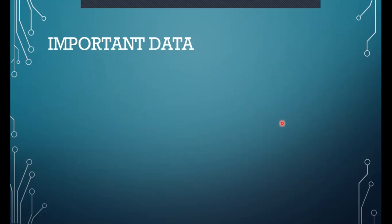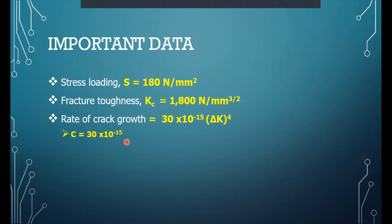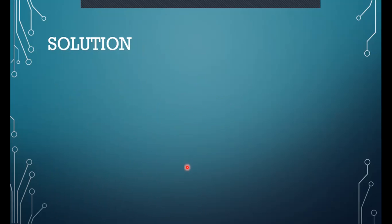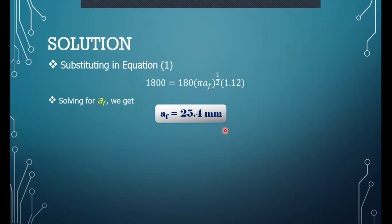From the question data: stress loading 180 Newton per millimeter square, fracture toughness K_c = 1800, crack growth rate equation gives C = 13×10^{-15} and n = 4, initial crack length a_i = 0.4 mm. Substituting into K_c = α·S·√(πa_f) and solving for a_f, we get a crack length at failure of 25.4 millimeter.